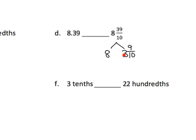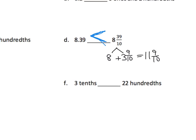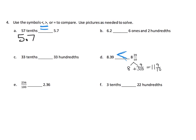I'm going to decompose this: 39 tenths becomes 3 and nine tenths, because 39 tenths equals 3 wholes and 9 tenths. So altogether this is equal to 11 and nine tenths. That tells us the number on the right is larger than the number on the left.